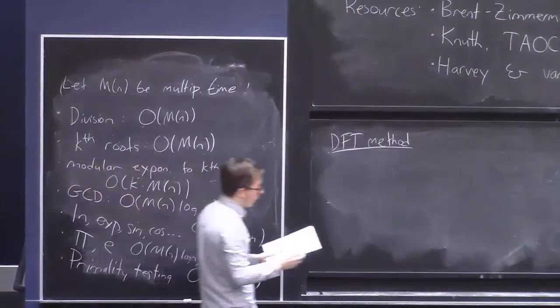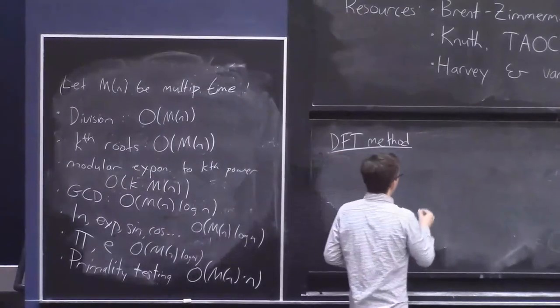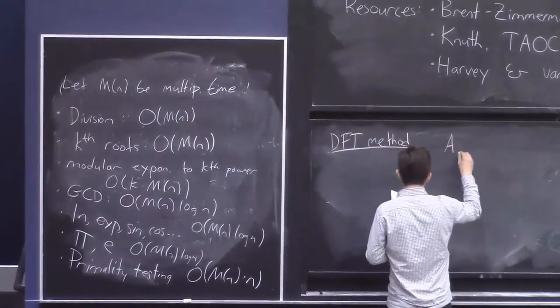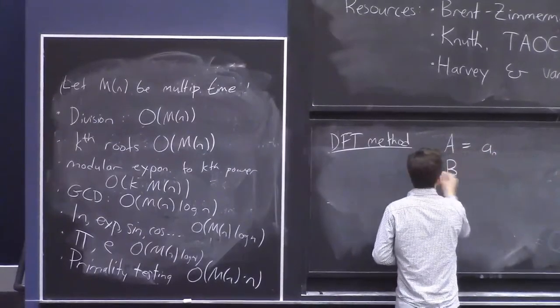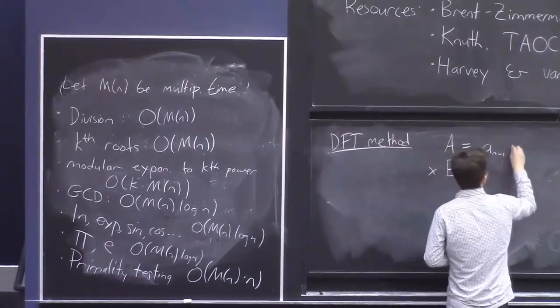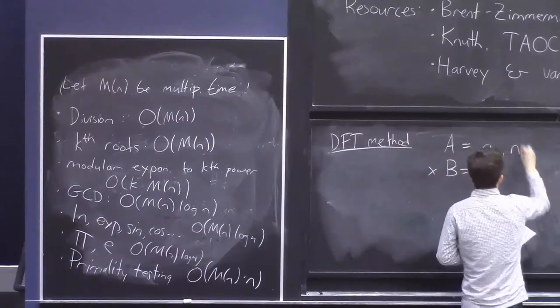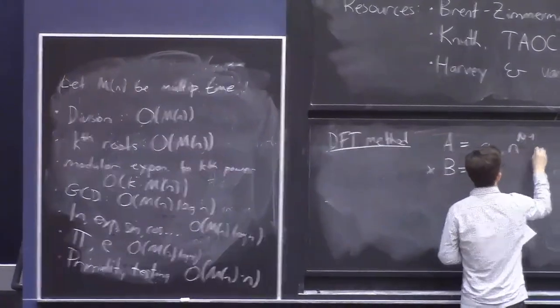So that's really the problem that we're going to solve. So recall we have two capital N digit numbers. Let me call them capital A and capital B. And we want A times B. And I can write their digits. I can write them in base n like this, base little n, like this.